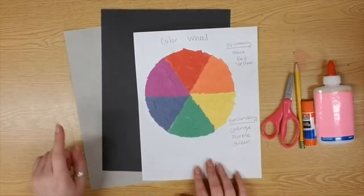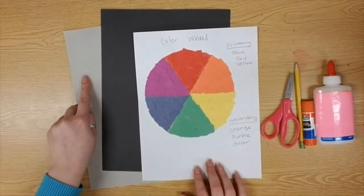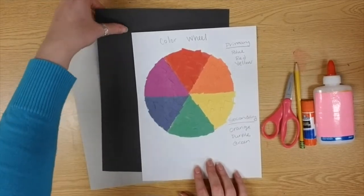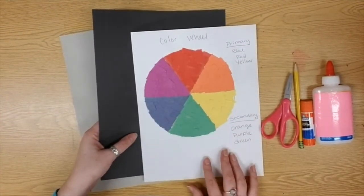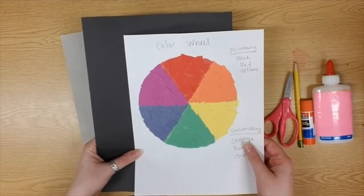Okay now the gray paper is what we are going to be gluing our color wheel onto. The black paper and the white that's around your color wheel still is what we're going to use to build our monsters today.